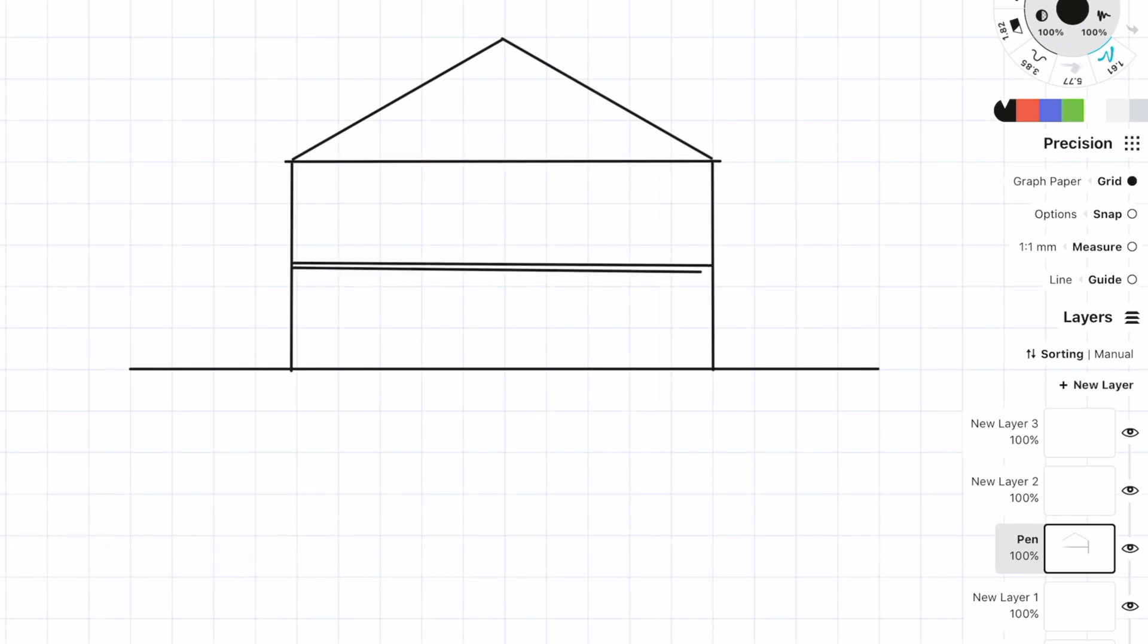A lintel is essentially a structural element which spans over a window opening or a door opening. The design of a lintel is different to the design of a normal beam and that's because we're supporting masonry and essentially masonry can arch which affects how the load is spread onto the structural element or the beam or the lintel.